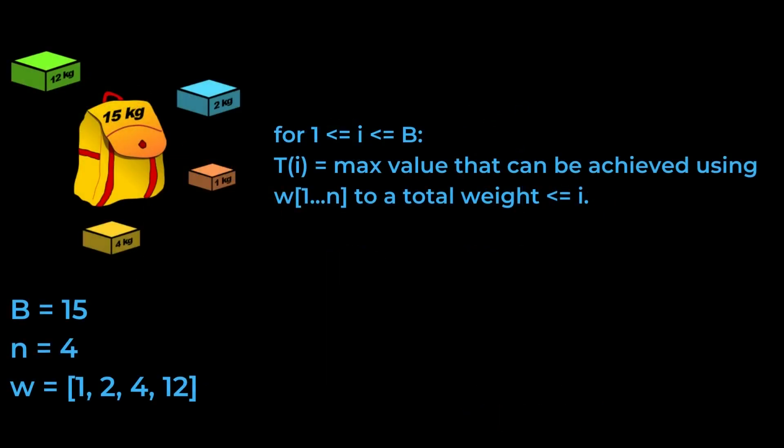If we want to solve the knapsack problem using dynamic programming, we're going to break it down into smaller subproblems. T is going to be the maximum value that we can achieve using the different items up to a total weight of less than or equal to i. We'll calculate this for all values of i up to the capacity B, and the solution to the overall problem is going to be the table entry at B.